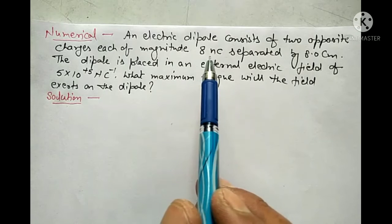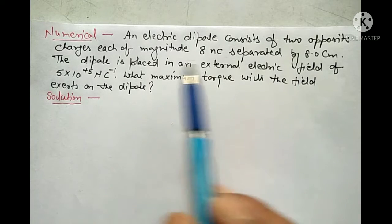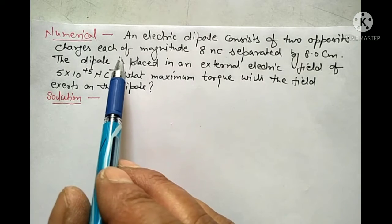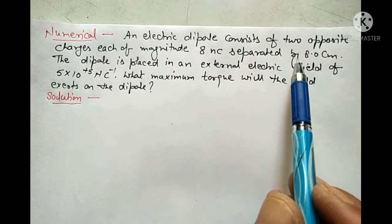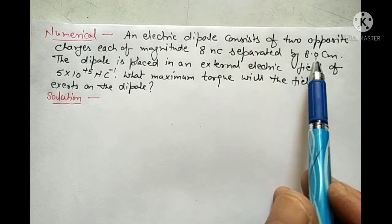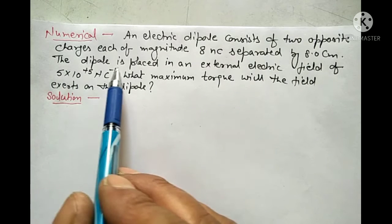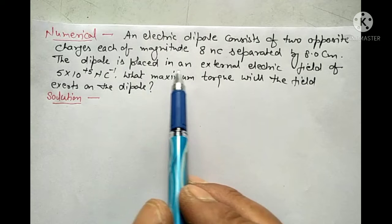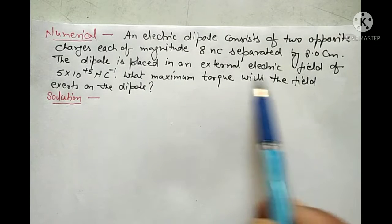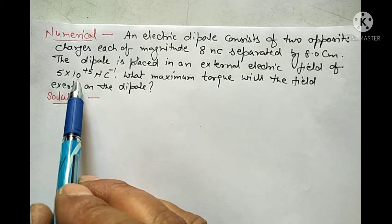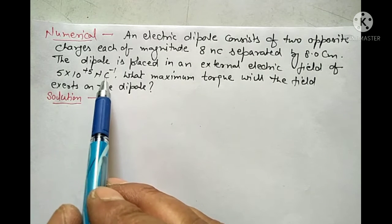Numerical. An electric dipole consists of two opposite charges, each of magnitude 8 nanocoulomb, separated by 8.0 cm distance. The dipole is placed in an external electric field of 5 × 10⁵ Newton per Coulomb.